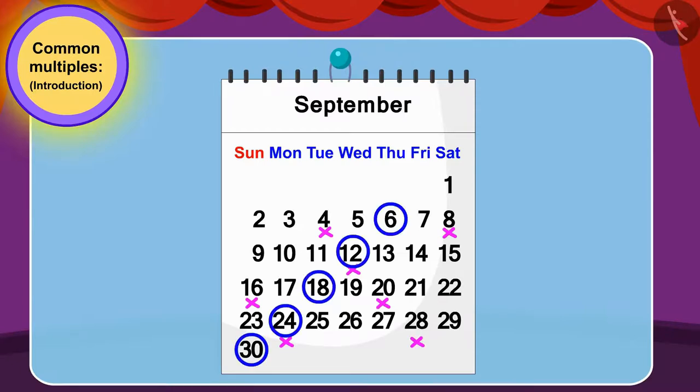We can find the answer in this way by finding common multiples of four and six. We can see that the numbers twelve and twenty-four are common multiples of four and six. So, Bablu's math and science classes will be held on twelfth and twenty-fourth simultaneously.